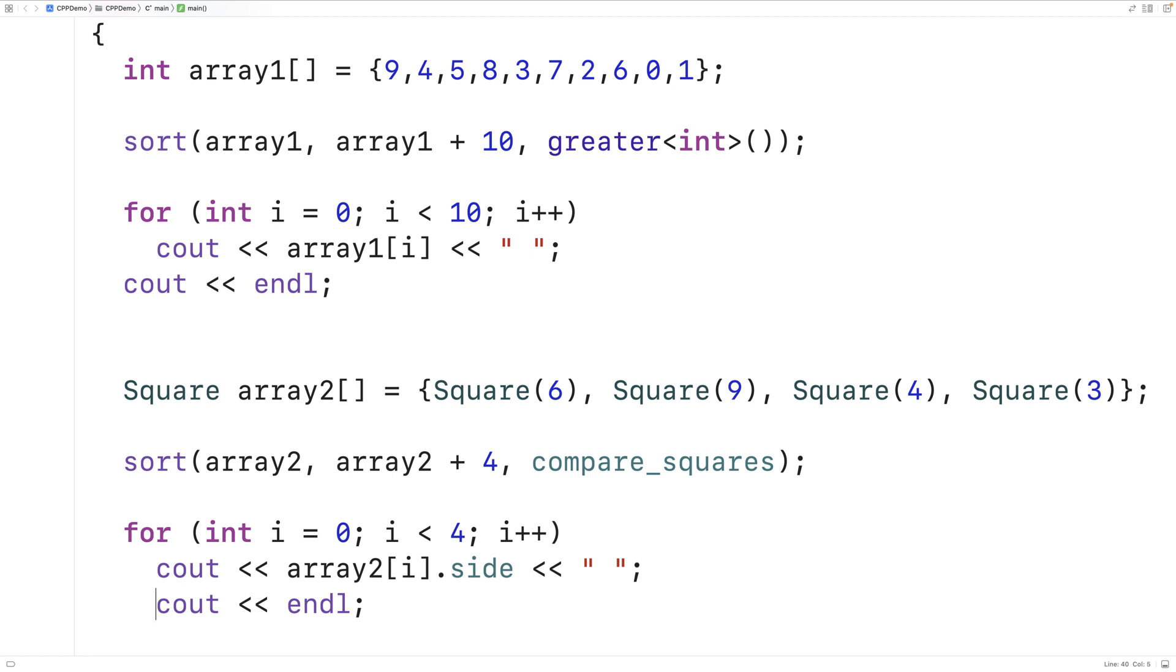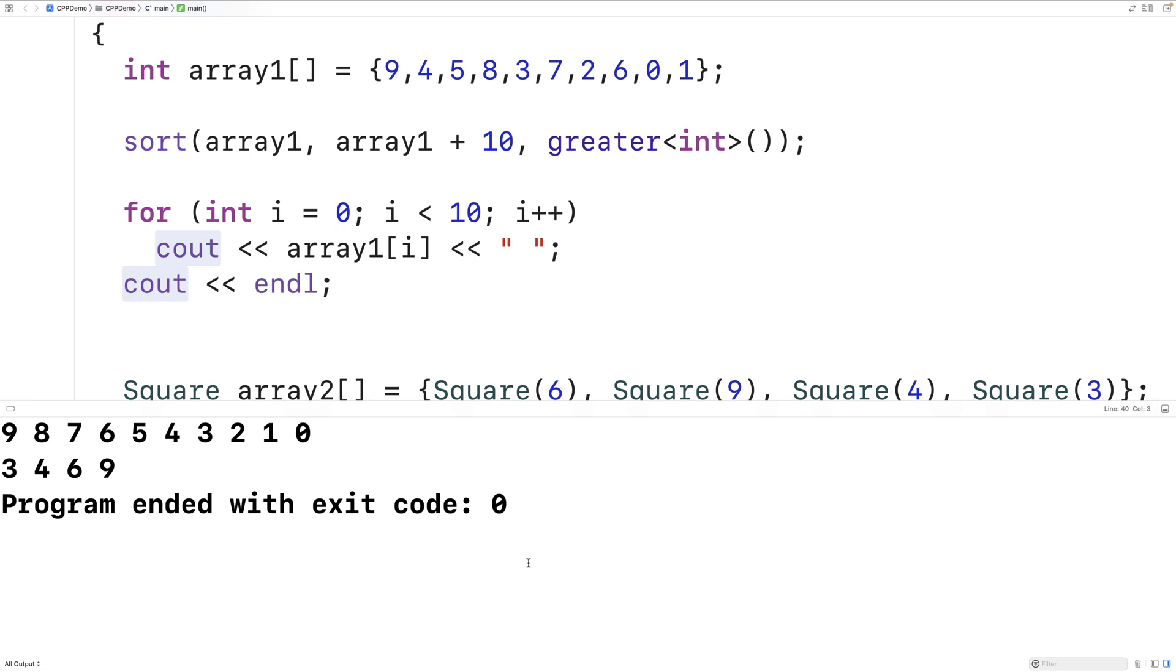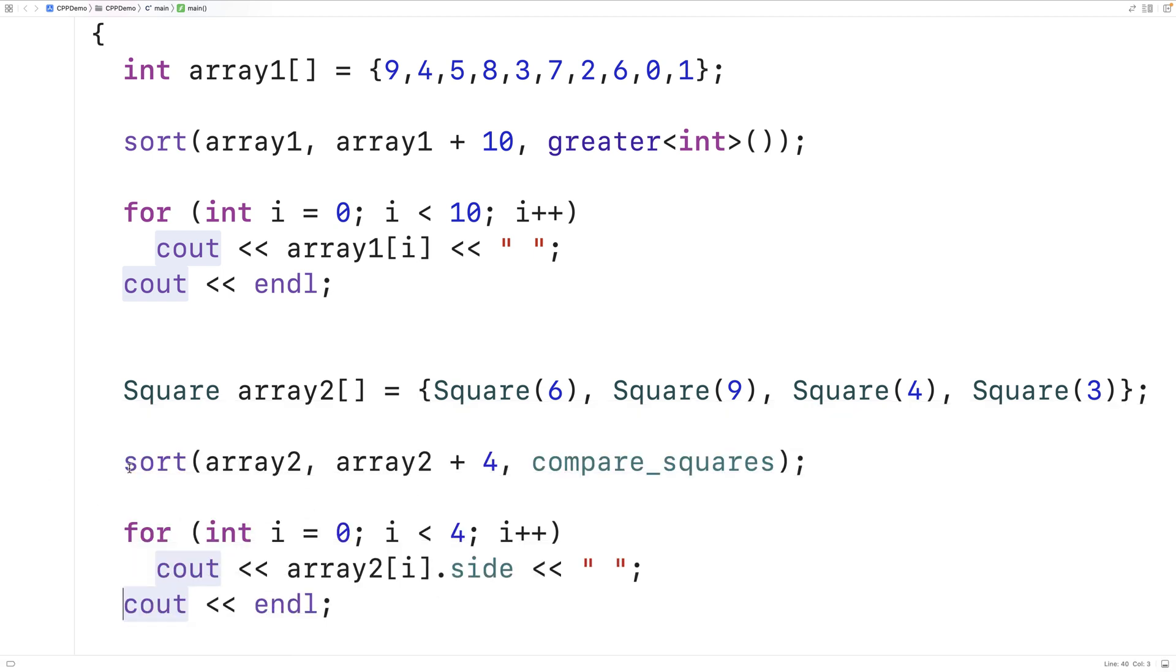So we'll save this and run it. And now we see that our square objects are sorted as well. We get 3, 4, 6, 9. And that's because of that comparison function we defined there. It's determining how to compare squares.